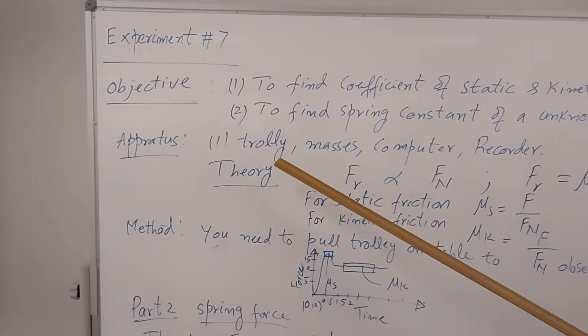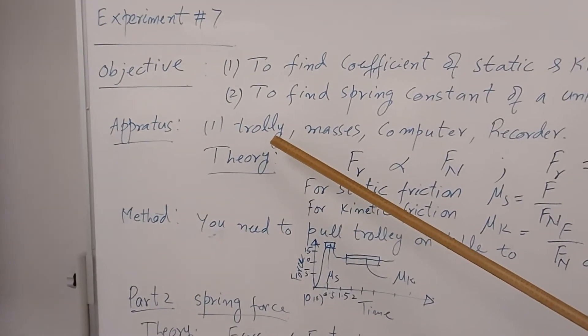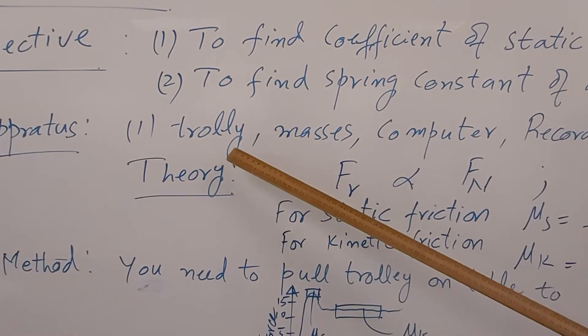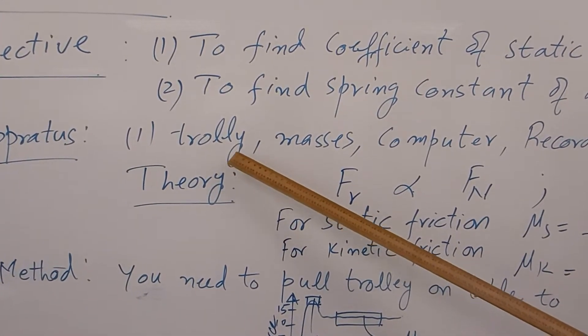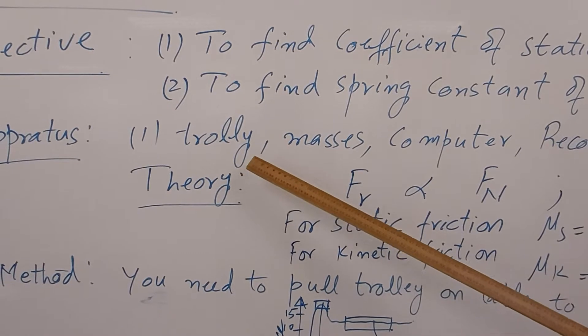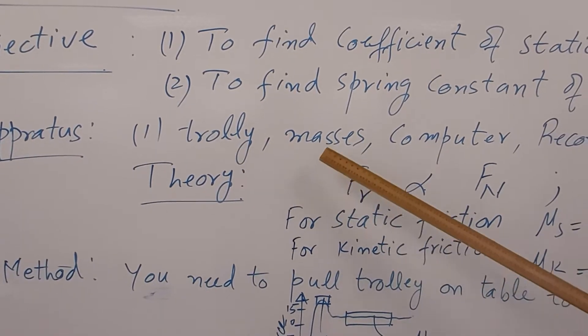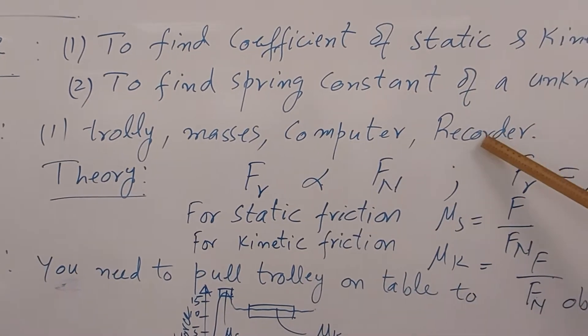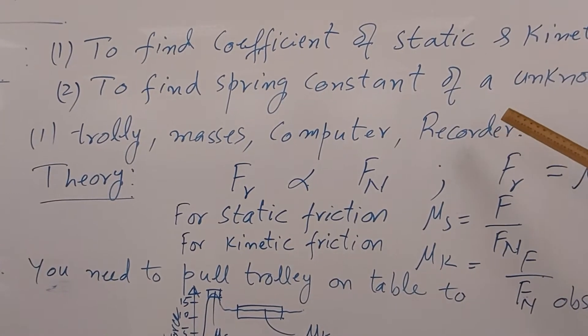To do the experiment you pull a trolley on the table with some weight. For this you need masses, you need a computer, and you need a recorder, some device which will send the data to the computer.